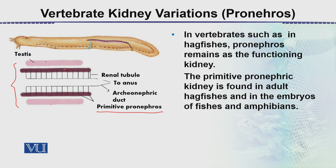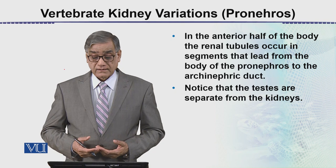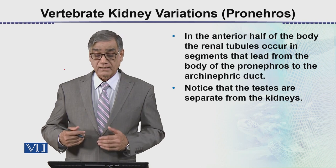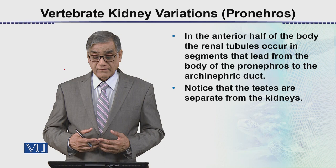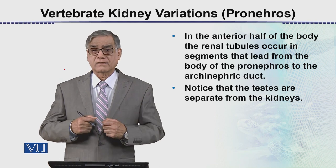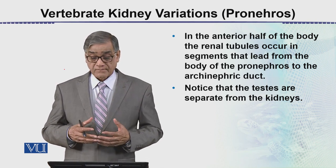The ducts unite together to form the archeo-nephric duct. This is a very simple form of kidney found in primitive vertebrates or amphibian larvae such as tadpoles, serving both osmoregulation and excretion. In the anterior half of the body, the renal tubules occur in segments, and each segment opens into the main duct called the archeo-nephric duct.